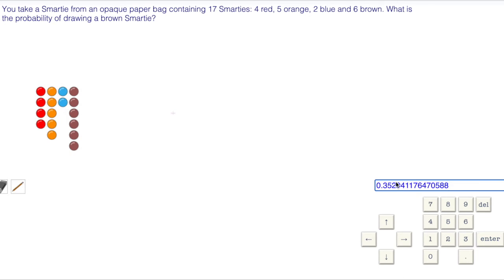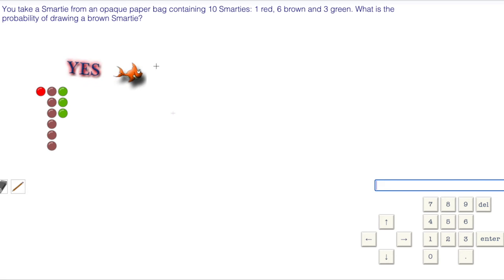What's the probability of drawing a brown smartie? Once again, it's six out of ten. You can reduce the fraction, which is three out of five.